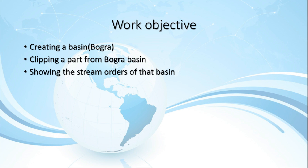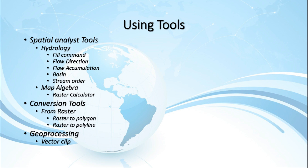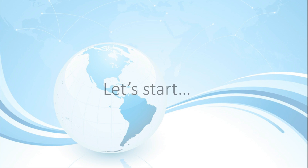Work Objective: Creating a Basin, clipping apart from Bogra Basin, and showing the stream orders of that basin. Using Tools: Spatial Analyst Tools — Hydrology Fill, Flow Direction, Flow Accumulation, Basin, Stream Order, Map Algebra Raster Calculator, Conversion Tools — Raster to Polygon, Raster to Polyline, Geoprocessing Vector Clip.